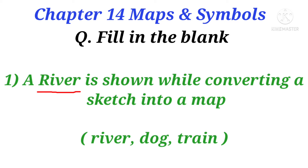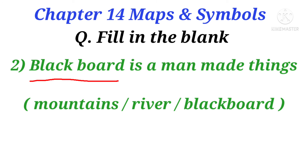Here are the fill in the blanks. Question 1: A river is shown while converting a sketch into a map. Question 2: Dash is a man-made thing. Options are mountain, river, and blackboard. The answer is blackboard.